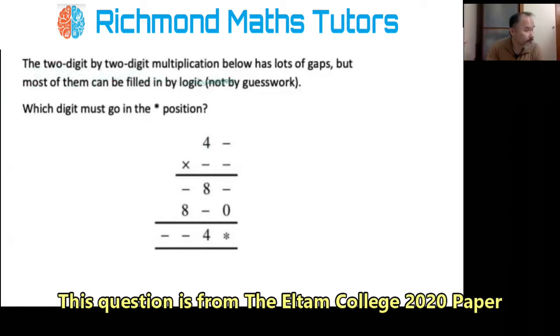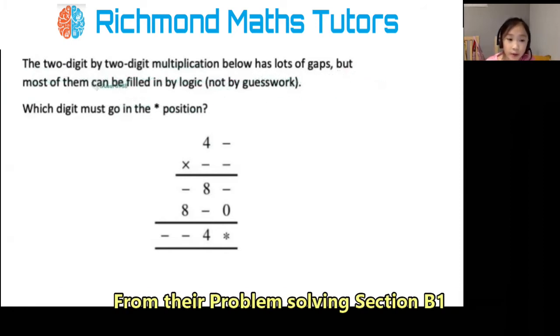The two-digit by two-digit multiplication below has lots of gaps, but most of them can be filled in by logic, not by guesswork. Which digits must go in the star position?